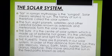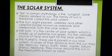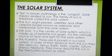The word 'solar' comes from Roman mythology, which means Sun god. So solar means related to the Sun, and the family of the Sun is therefore known as the solar system — the Sun, eight planets, satellites, and celestial bodies like asteroids and meteorites are all part of it. The Sun is the center of the solar system, made up of extremely hot gases, and is the ultimate source of heat and light.